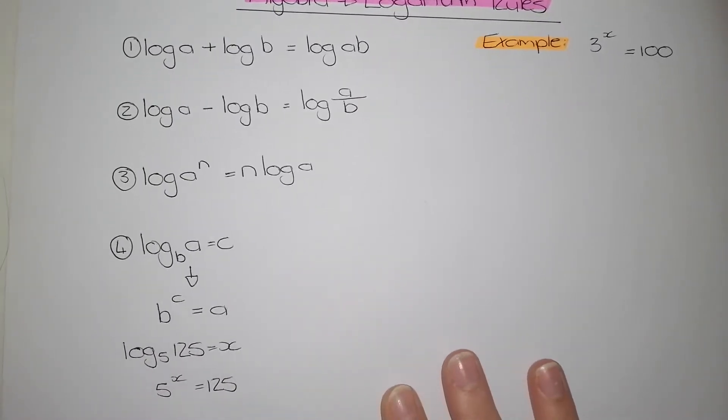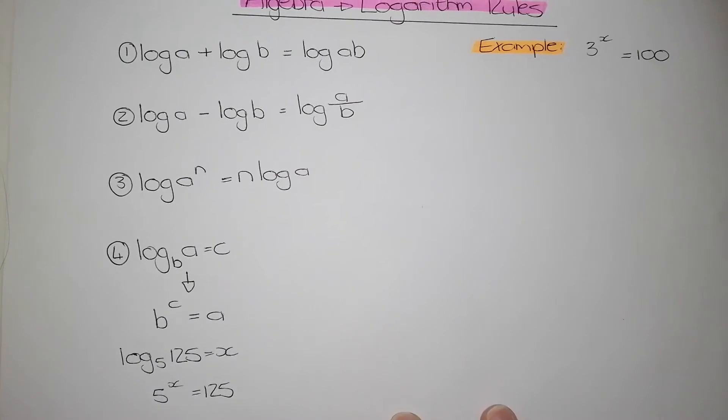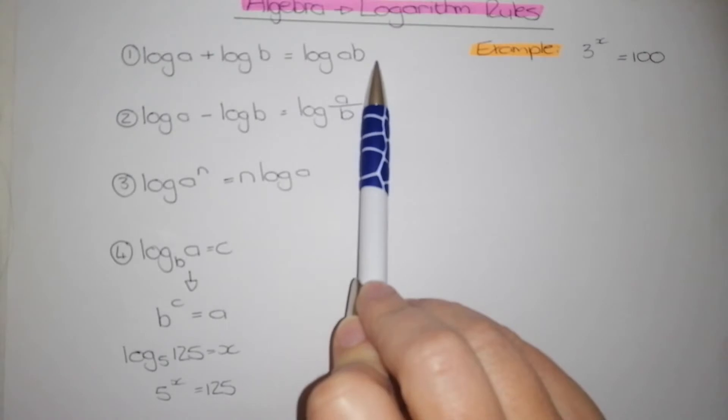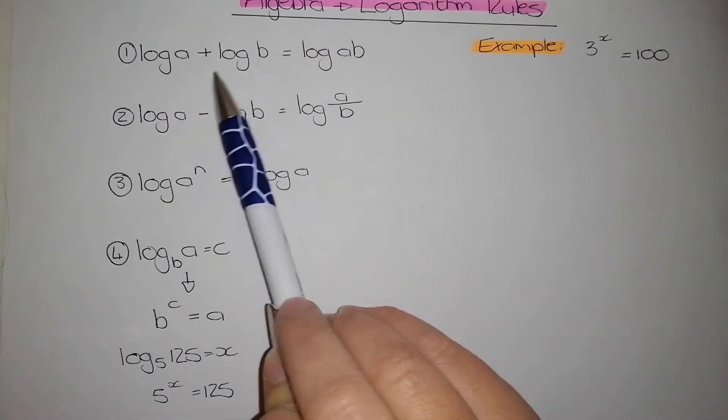So, let's look at the four important rules. First of all, when we have one log and it's added to another, we can multiply the two values at the end of the log.